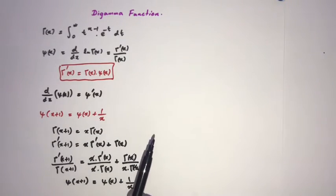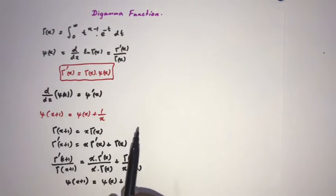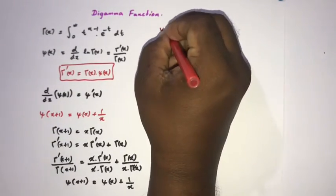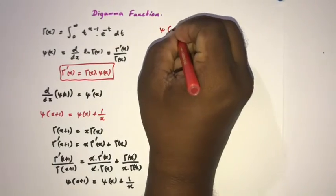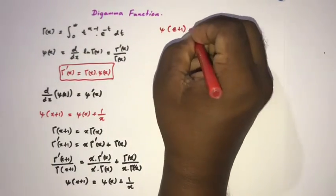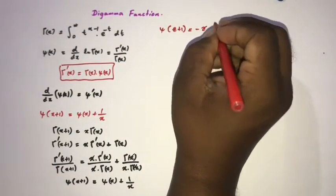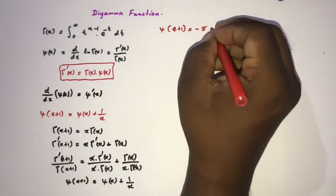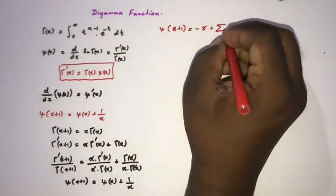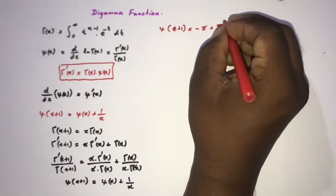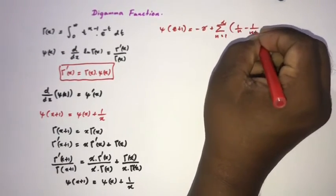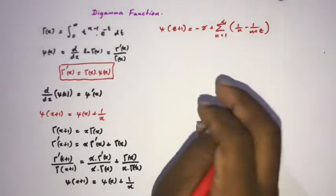Now I will talk about the series formula for the digamma function. The formula is: ψ(c+1) = −γ + sum from n=1 to infinity of (1/n − 1/(n+c)), where γ is the Euler–Mascheroni constant.